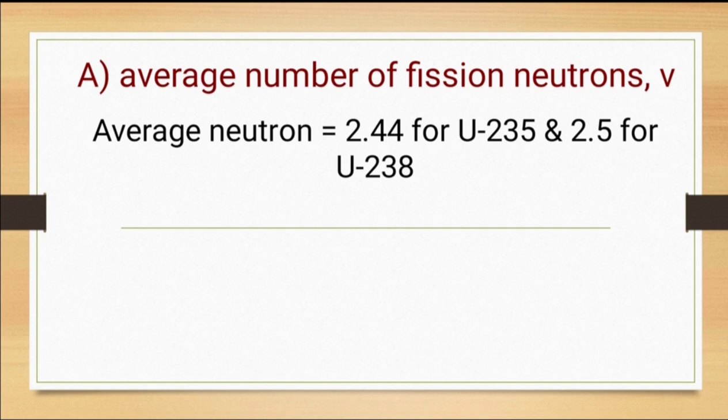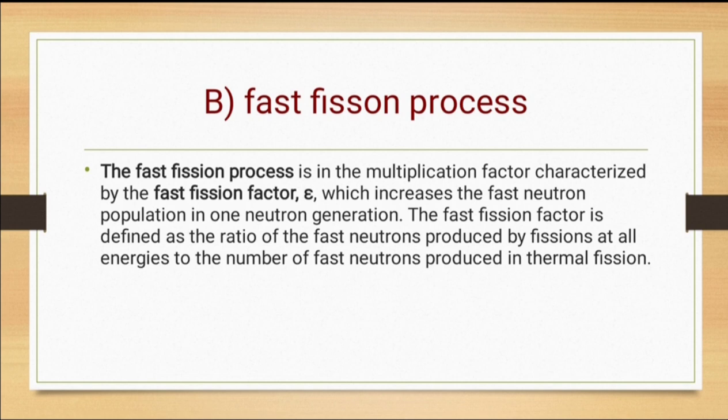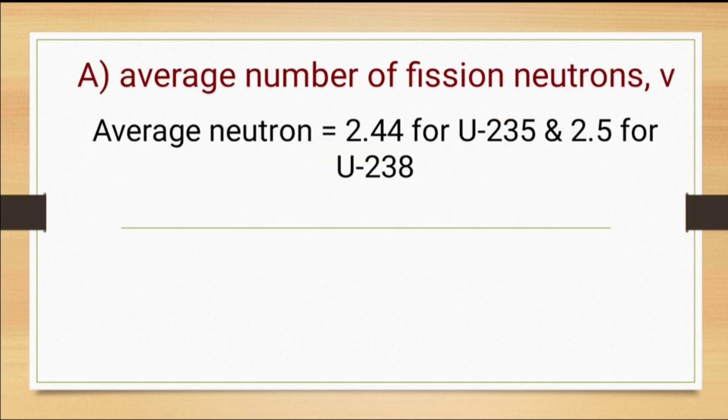The second step is the fast fission process, given by epsilon. The fast fission factor epsilon characterizes the multiplication factor and increases the fast neutron population in one neutron generation. The fast fission factor is defined as the ratio of fast neutrons produced by fission at all energies to the number of fast neutrons produced in thermal fission. So epsilon equals fast neutrons divided by neutrons produced by thermal fission. We multiply each term in the four factor formula equation, giving ν into epsilon for the neutrons.